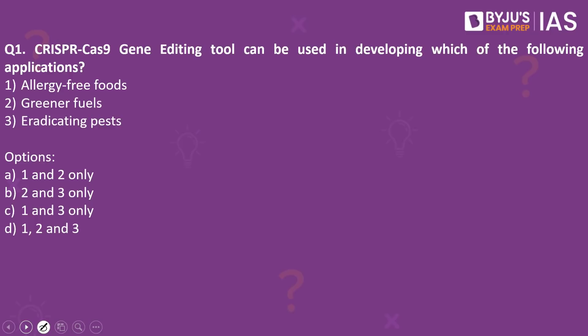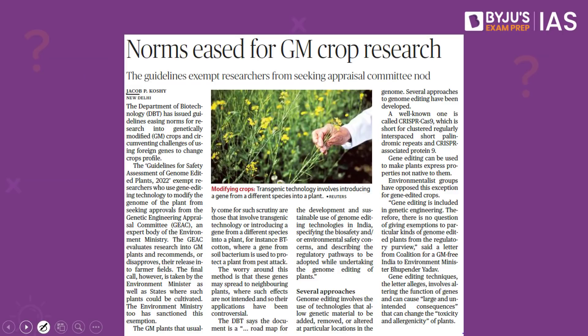Let's get started and look into the first question. The CRISPR-Cas9 gene editing tool can be used in developing which of the following applications: allergy-free foods, greener fuels, eradicating pests? The answer to this is 1, 2 and 3. We have taken this practice question because this article on The Hindu makes a reference to CRISPR-Cas9.